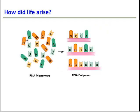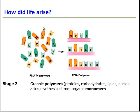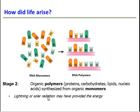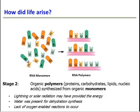Stage 2 starts with those organic monomers, and from them, polymers are made. For example, the monomers of RNA assembled into a long RNA sequence. Lightning or solar radiation could have provided the energy to make these reactions possible. Water was present in the oceans and atmosphere for dehydration synthesis — in order to put these things together, we have to remove water. And there was a lack of oxygen, which was important because when oxygen is around, bonds between monomers often can't form. So the absence of oxygen made the environment highly reactive and likely to produce these reactions.